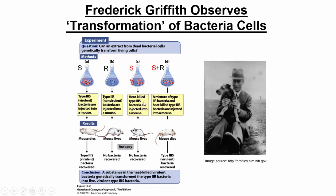Those are our three control groups — nothing too interesting so far. But in his experimental group, something very interesting happened. He took a mixture of the second scenario (column B) and the third scenario (column C) — he mixed them together, and the mouse died. So he took the 2R bacteria that did not kill the mice, and the heat-killed 3S that did not kill the mice either. He mixed them together, injected them, the mouse died. What did he recover? He recovered type 3S deadly bacteria.